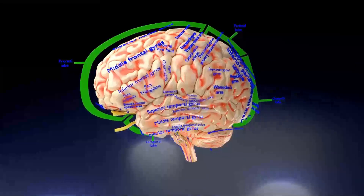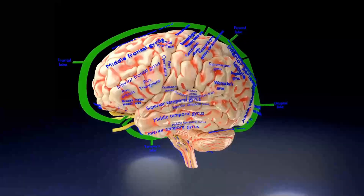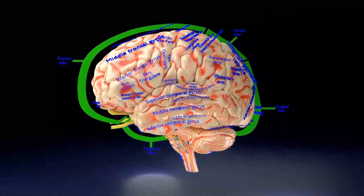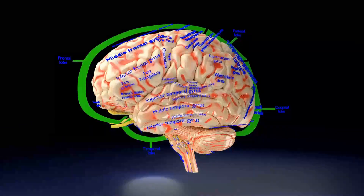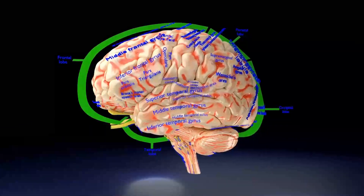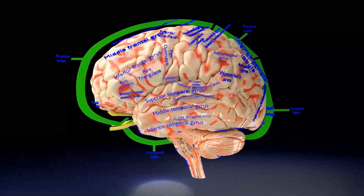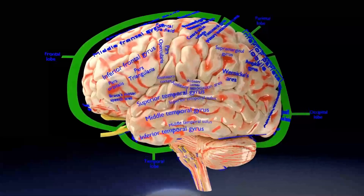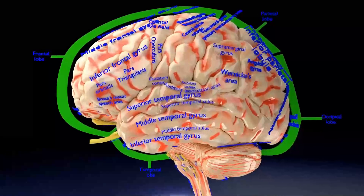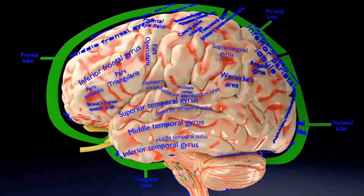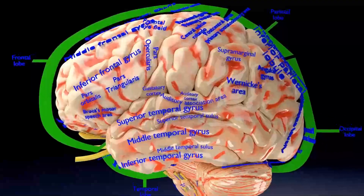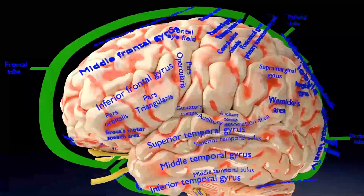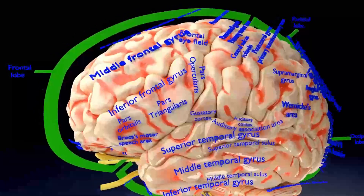Coming to the outer visible structure of the brain, you can see the outer layer of the cerebral hemispheres composed of a highly convoluted or wrinkled outer layer of gray matter called the cerebral cortex. The crest of a single convolution is known as a gyrus, plural gyri, and the fissure between two gyri is known as a sulcus, plural sulci.